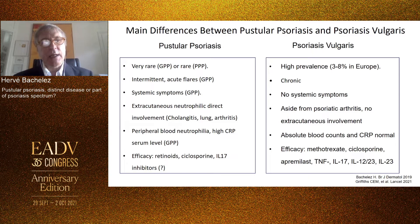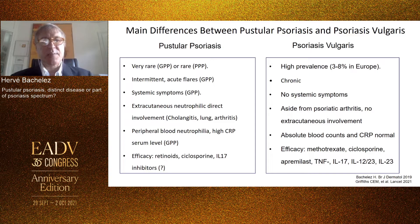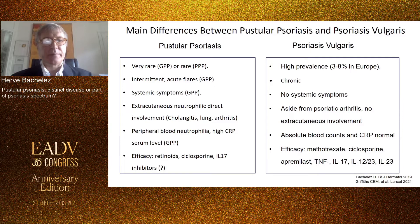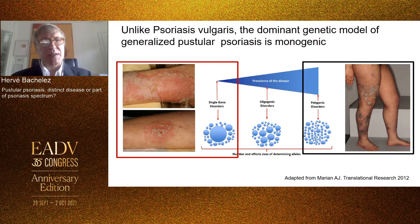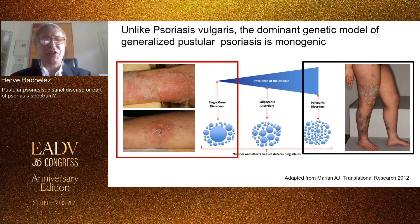Finally, the therapeutic response to anti-psoriatic therapies is much less consistent in pustular disease than in psoriasis vulgaris — this applies for the biological targeted therapies. But the major difference between pustular disease and psoriasis vulgaris lies essentially in the genetic model: it is a monogenic model for GPP, which is dominant, and it is a complex multigenetic model for psoriasis vulgaris.